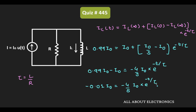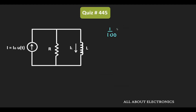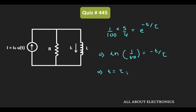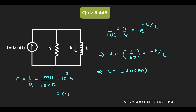If we further simplify it, we can write it as 1/100 times 5/4 is equal to e^(−t/τ). Taking the natural log on both sides, ln(1/80) is equal to minus T divided by τ, which means T is equal to τ times ln(80), where τ is equal to L divided by R. The value of L is equal to 1 millihenry and the value of R is equal to 10 kilohms, so τ is equal to 10^(−7) seconds, or 0.1 microseconds.